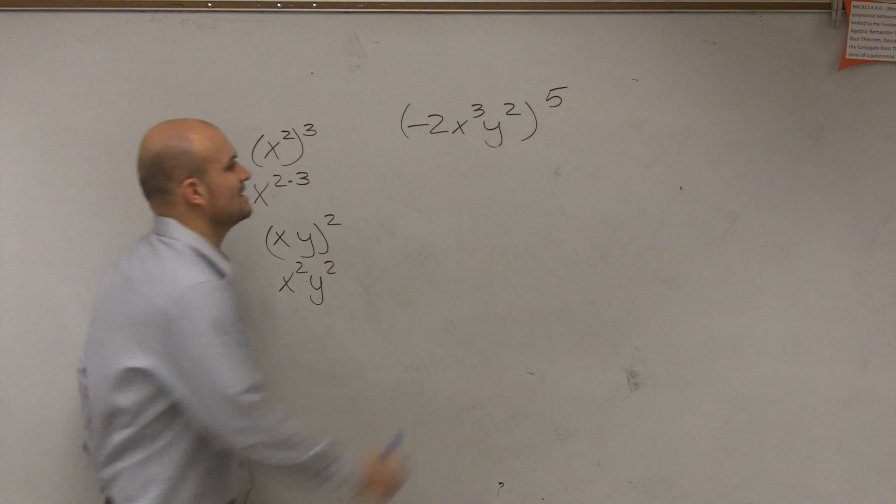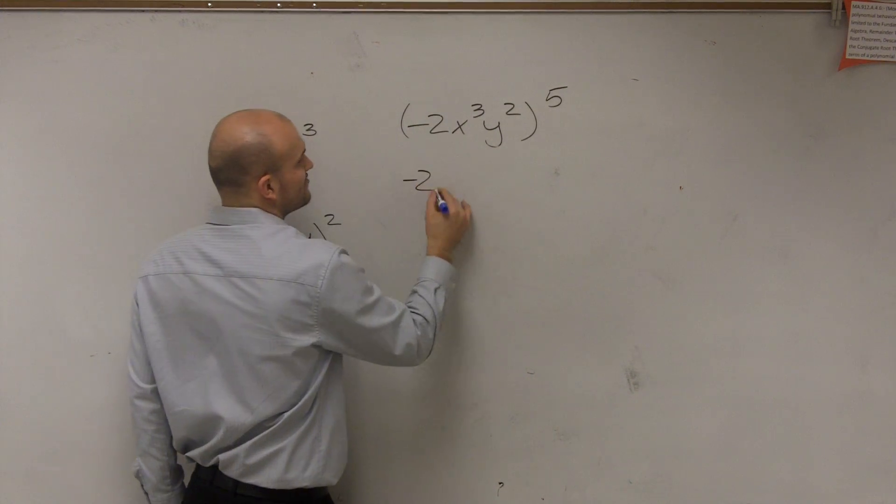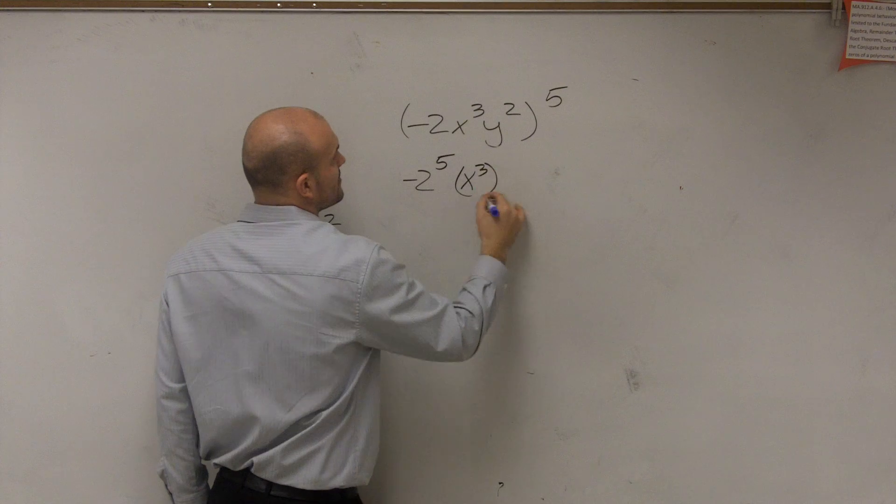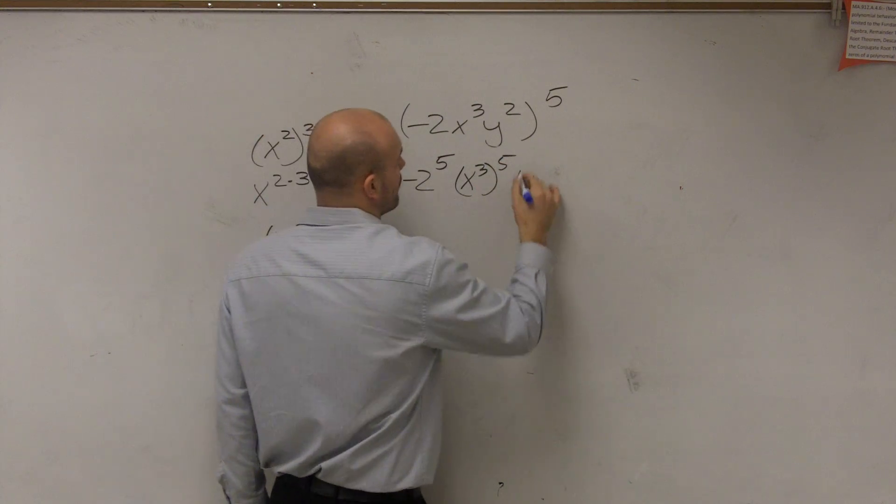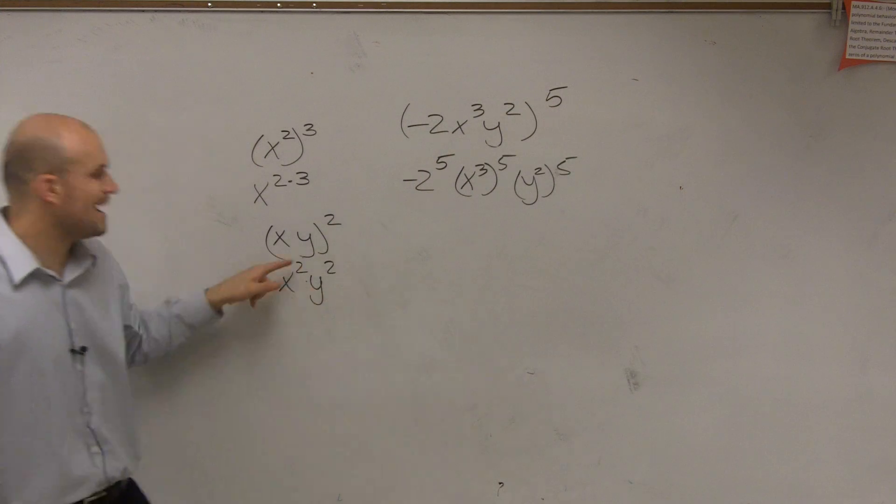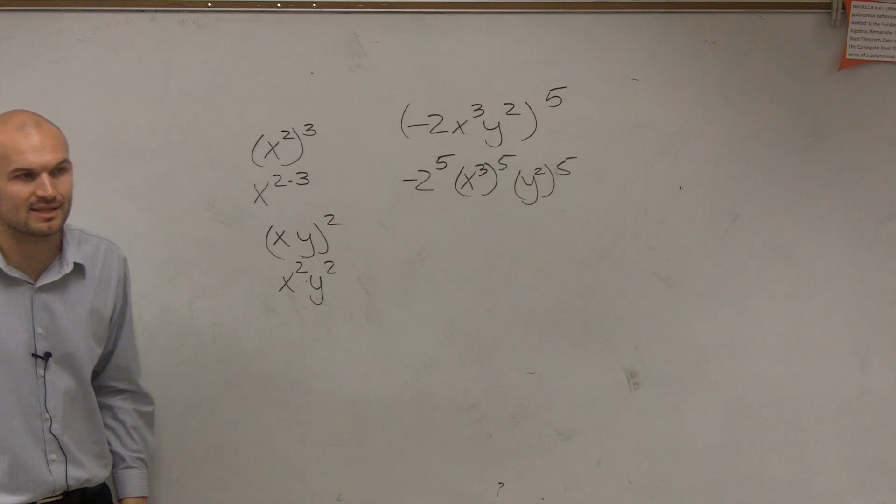So by applying that property, what that can state now is I have negative 2 to the fifth, x cubed to the fifth, and y squared to the fifth. So this fifth power gets applied to every single term inside the parentheses.